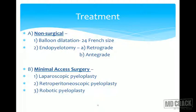Minimal access surgery options include laparoscopic or keyhole surgery — laparoscopic pyeloplasty via a transabdominal approach, which is commonly used by urologists today. The second approach is retroperitoneoscopic pyeloplasty, done from the back via a retroperitoneal or extraperitoneal approach. Lastly, robotic pyeloplasty is still in its infancy in our country but represents the near future; currently robotic surgery is limited mainly to oncological surgery.